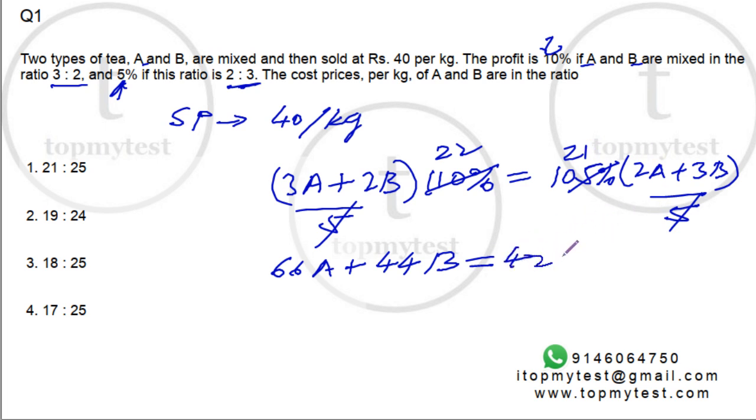If I rewrite this, 66 minus 42 is 24A equals 19B, so A by B should be equal to 19 is to 24.